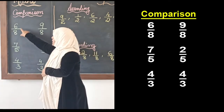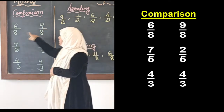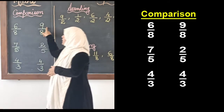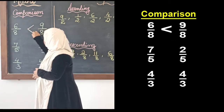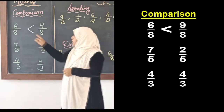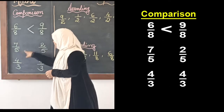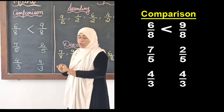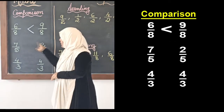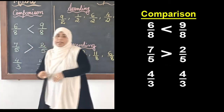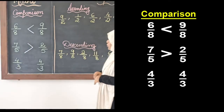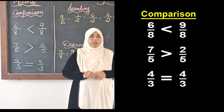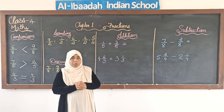The first example is 6/8 and 9/8. The denominators are the same, so we just compare the numerators 6 and 9. Since 6 is smaller than 9, then 9/8 is greater than 6/8. Next, 7/5 and 2/5 — denominators are the same, so we compare numerators 7 and 2. Since 7 is greater than 2, then 7/5 is greater than 2/5. And 4/3 and 4/3 are equal. This is how we do comparison of like fractions — we simply compare the numerators and put the sign.